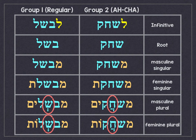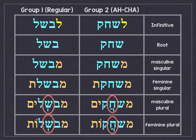Here we see the two groups side by side. With our regular Pi'el verbs, we replace the L' in the infinitive with M' for conjugation — going from L'Vashel to M'Vashel, M'Vashelet, M'Vashlim, and M'Vashlot. For the Acha Pi'el verbs, the masculine and feminine singular stay the same. So L'Sachek becomes M'Sachek and M'Sacheket. But in the plural, instead of a Sheva, we get an additional A sound: M'Sachakim instead of M'Sachkim, and M'Sachakot instead of M'Sachkot.